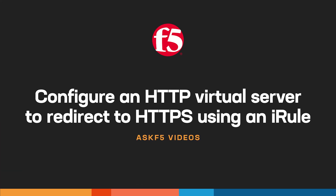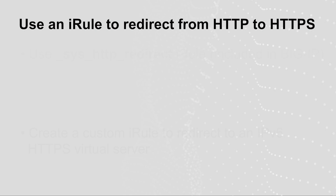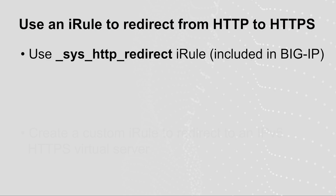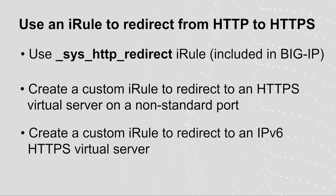Today, Ask F5 shows you how to use the configuration utility to configure an HTTP virtual server to redirect traffic to HTTPS using an iRule. Depending on your situation, you can use the default redirect iRule that comes with the BIG-IP system, or you can configure a custom iRule. A custom iRule may be useful if you want to redirect HTTP requests to your HTTPS virtual server and it uses a port other than the default 443 or uses an IPv6 address. This demonstration shows you how to accomplish these three tasks using the configuration utility.